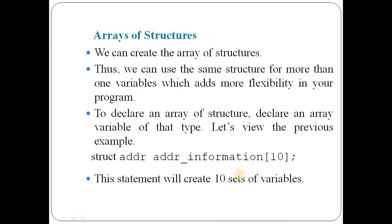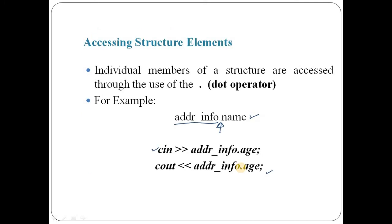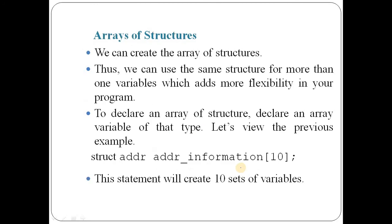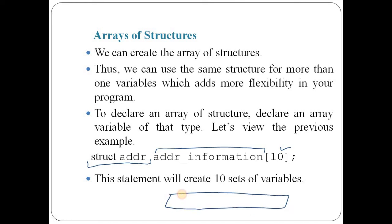Now, how we can make an array of a structure. If you want to create an array instead of individually defining different structure variables, we can create an array of similar variables. The syntax is: you write the structure name, then the array variable name such as address information, and the size is 10. This means an array of structures will be created, and each element of this array will represent a structure of type ADDR. There are 0 to 9 such structure variables, so info[0] will point to a structure variable of type ADDR.